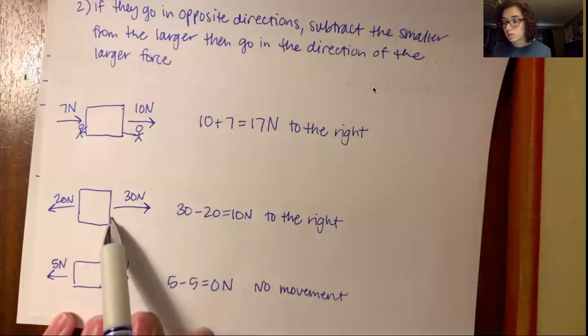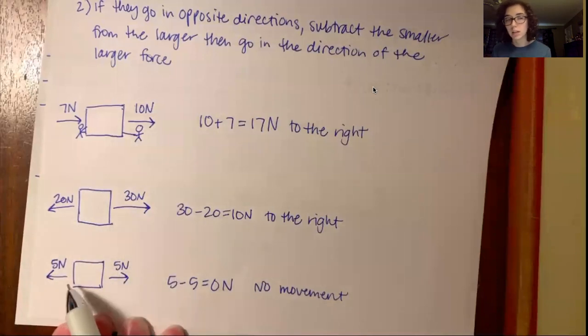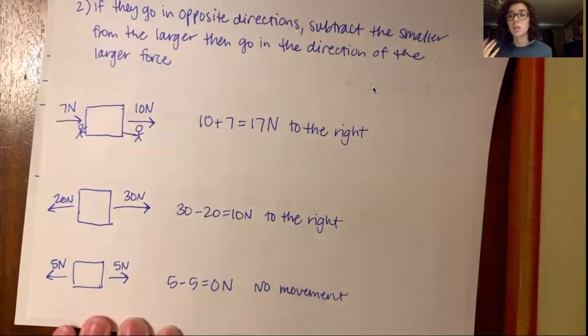Okay, so think of wherever the forces are going, it's somebody either pushing or pulling. Okay, so like here, you have two people pulling away from the box. Here, you have two people pulling away from the box. I could have also drawn the arrows going toward the box and both people pushing the box, but in opposite directions so the force cancels out so you get no movement.